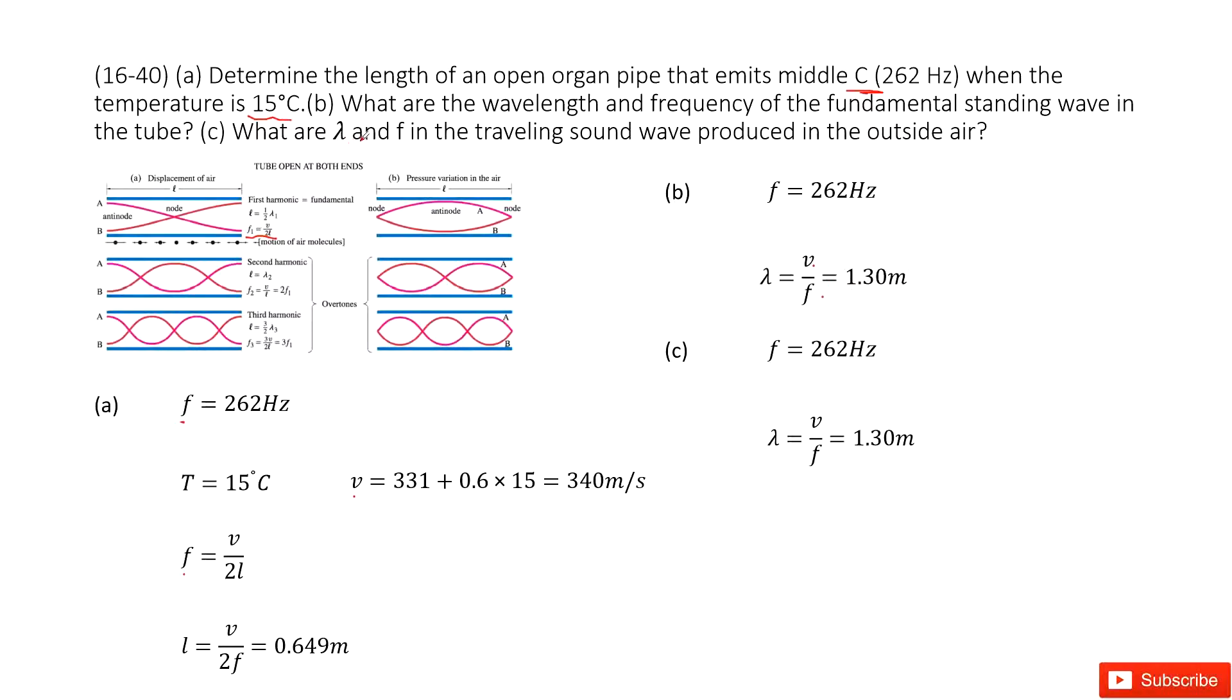The second part asks you the frequency, the wavelength and the frequency in the traveling sound wave in the outside air. So outside the air, the frequency is still the same because it is determined by the oscillation, the source of the oscillation. No change. And the lambda is still V over f. V is the wave speed in the air. And the frequency is the same. So we get the same wavelength there.